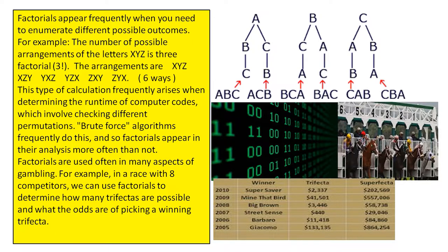Factorials are used often in many aspects of gambling. For example, in a race with eight competitors, we can use factorials to determine how many trifectas are possible and what the odds are of picking a winning trifecta.